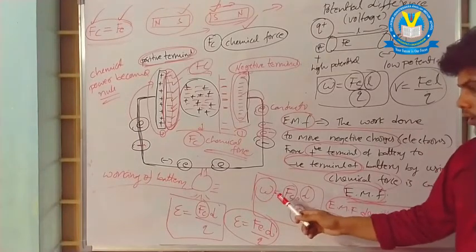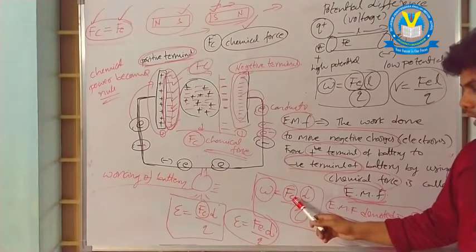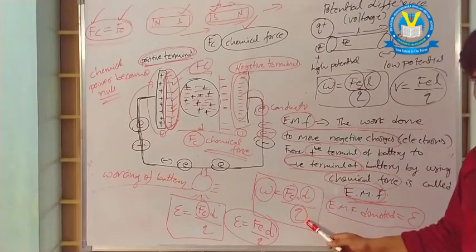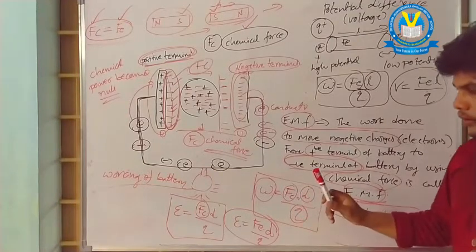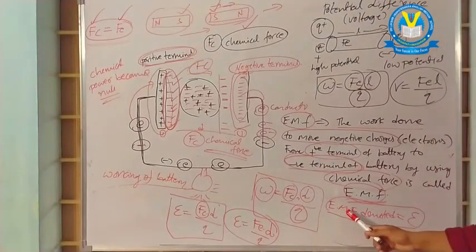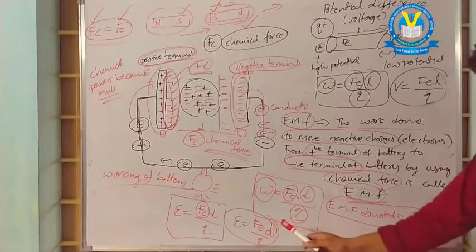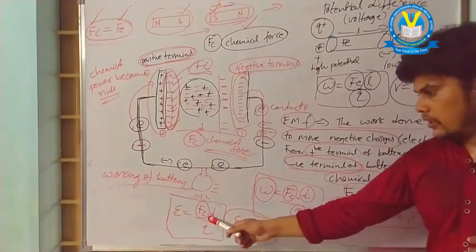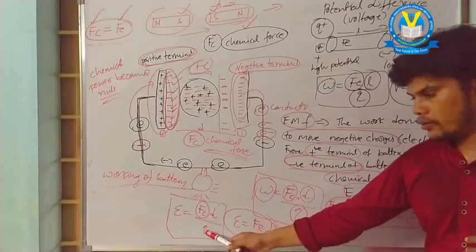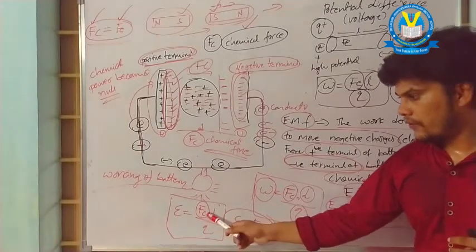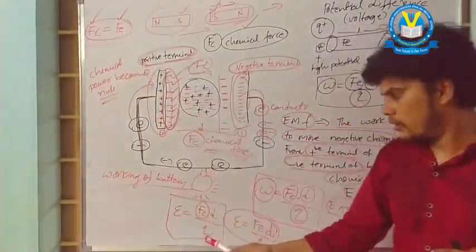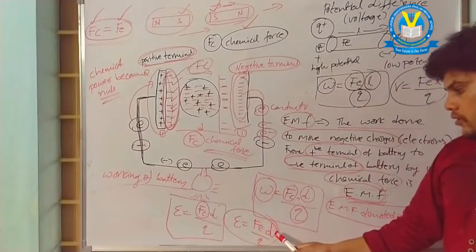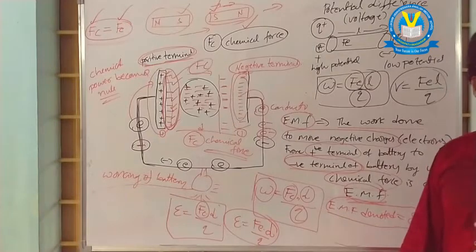W is the work done by applying chemical force, causing the charge to move distance D — all of this happens on charge Q. The electromotive force is denoted by epsilon: ε = Fc × D / Q. Since Fc equals Fe, we can also write ε = Fe × D / Q. This is the formula of electromotive force.